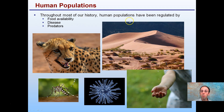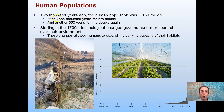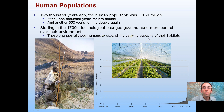Throughout most of history, human populations have been regulated by food availability, food access to an area, disease, and predators. Two thousand years ago, human population was about 130 million. It took a thousand years for it to double, and another 650 years for it to double again. However, starting in the 1700s, technological changes gave humans more control over their environment — no longer hunter-gatherers, using more sophisticated ways to produce food. These changes allowed human expansion to expand the carrying capacity of their habitats, leading to a rapid and extremely rapid increase in population overall.